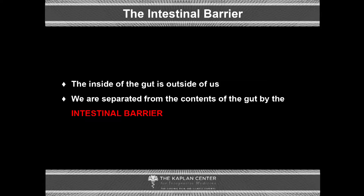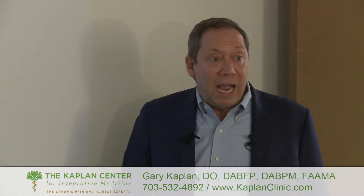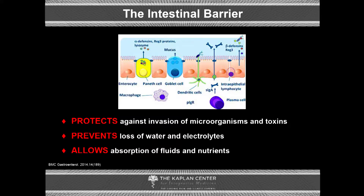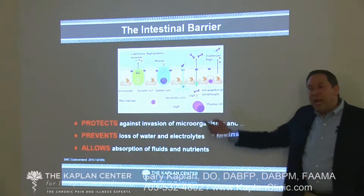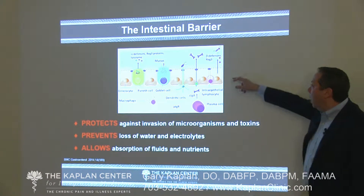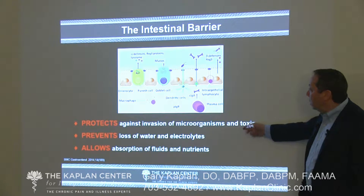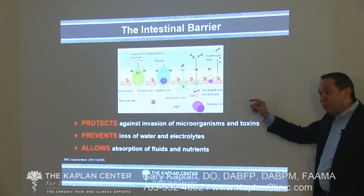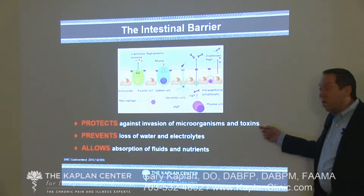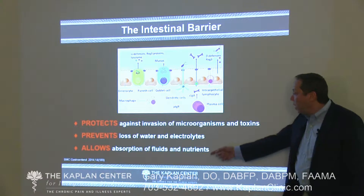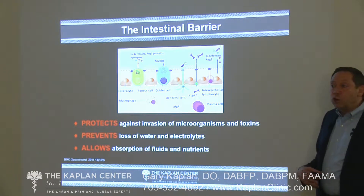The inside of the gut is actually outside of us. Until information moves from the bacterial gut microbiome into us, it's still outside of us. We are separated from the contents of the gut by the intestinal barrier — a single line of mucosal cells separating the inside of the gut from the blood. Its job is to protect us against invasions of microorganisms and toxins, prevent water loss, and absorb water and nutrients. It has a lot of work to do.